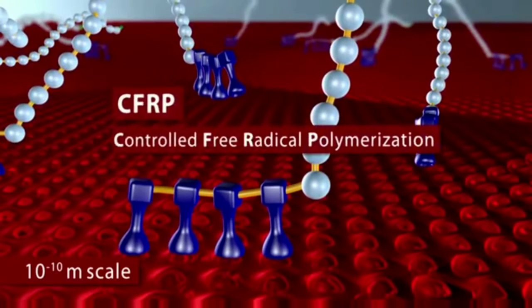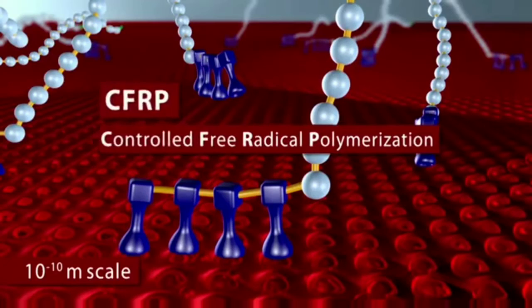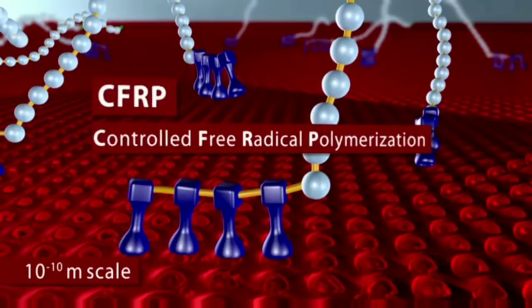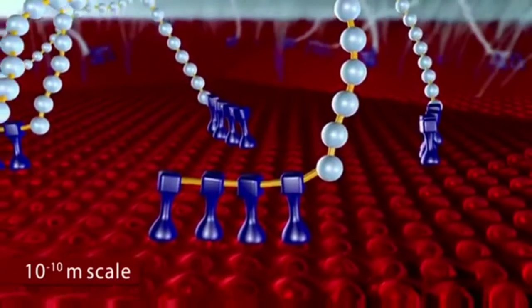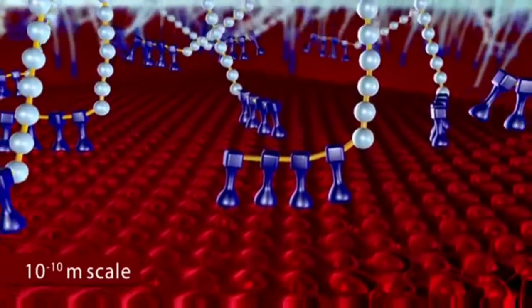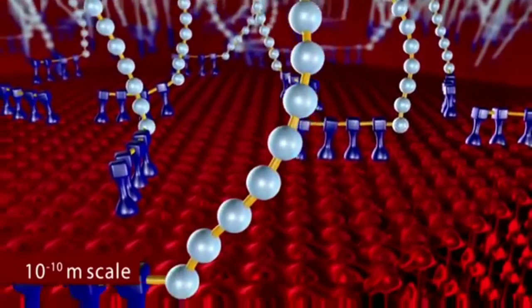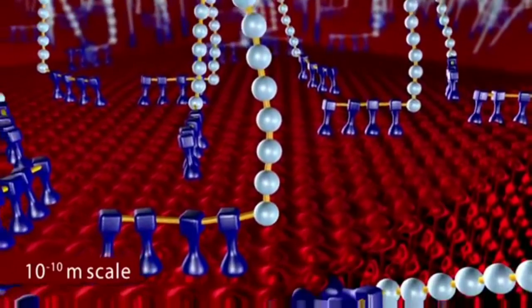The new award-winning CFRP controlled free radical polymerization technology allows us to synthesize highly specialized dispersant polymers with a precisely defined block copolymer structure.